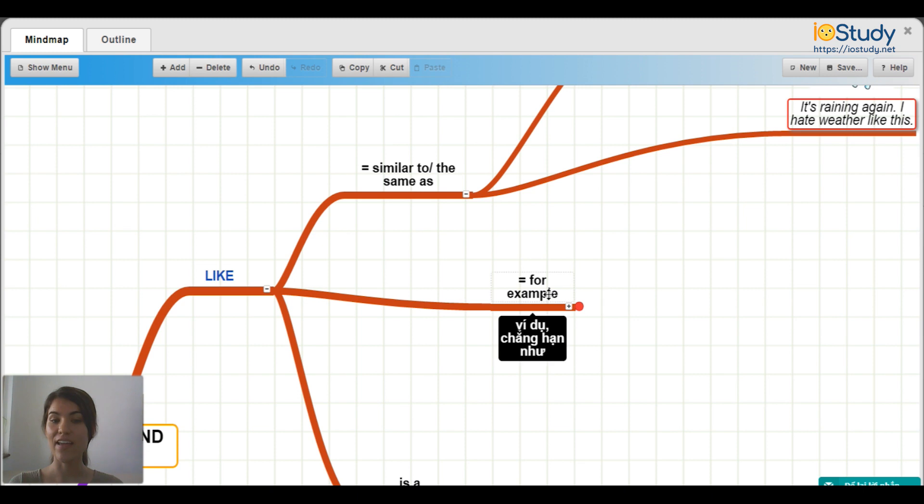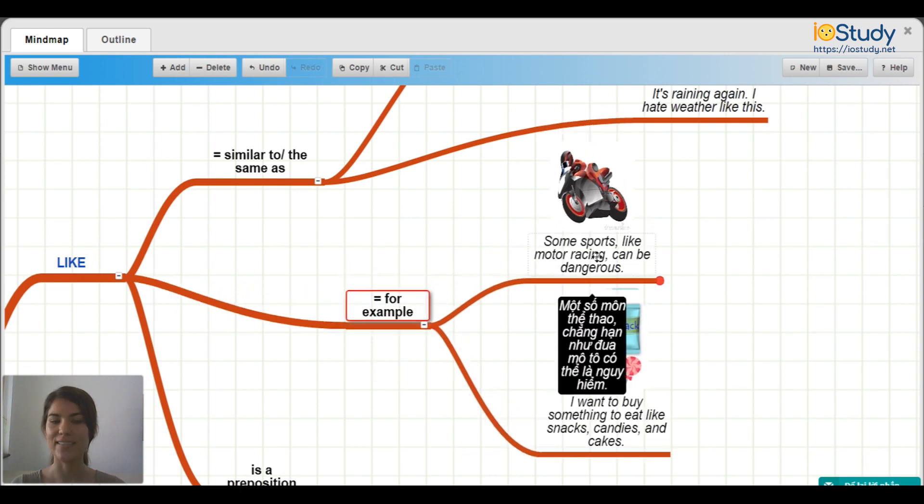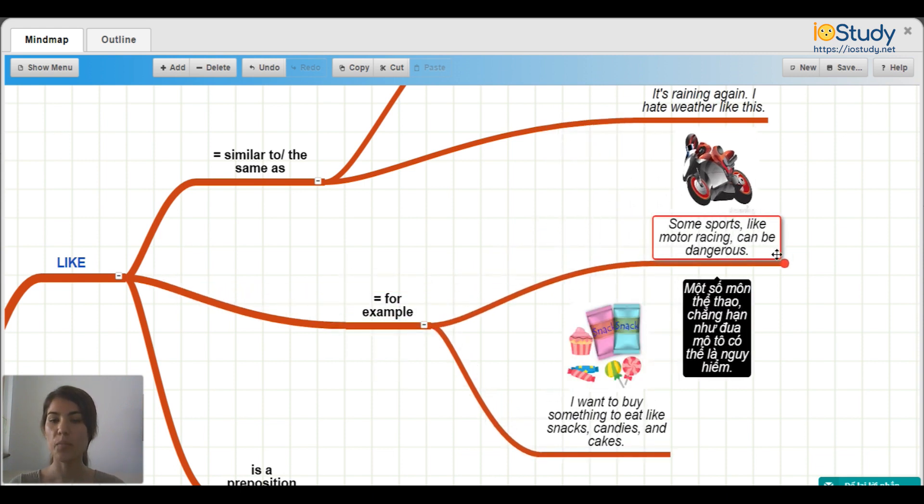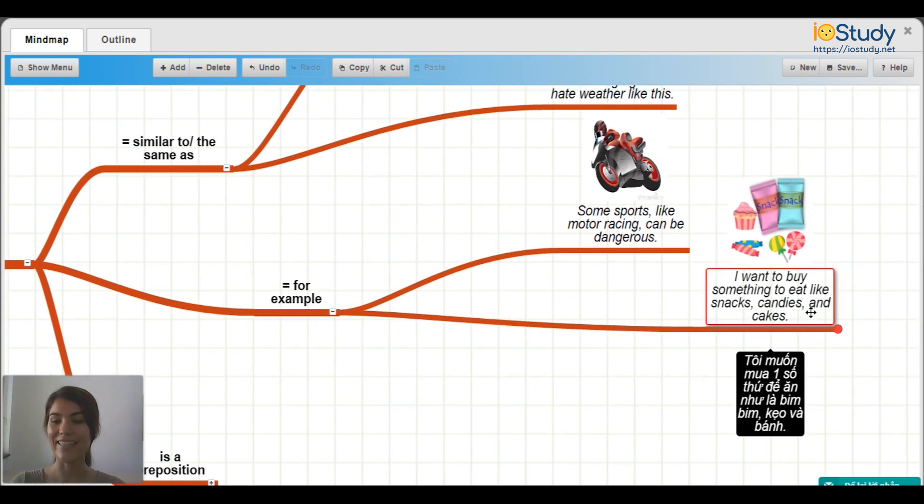We also use like to say for example. So here are some sentences. Some sports, like motor racing, can be dangerous. And I want to buy something to eat like snacks, candies, and cakes. So in both of these examples, you could substitute like for example.